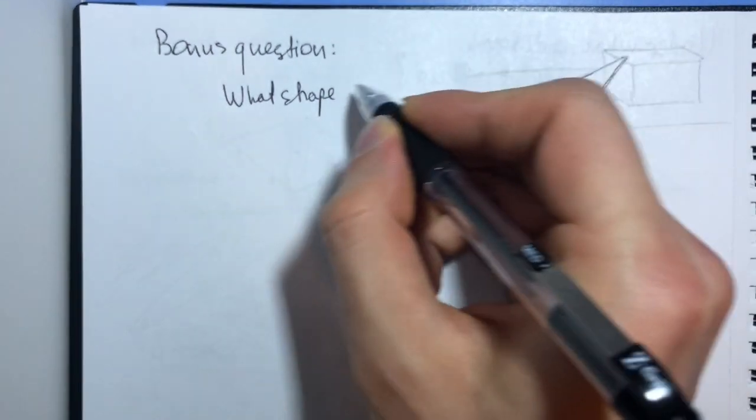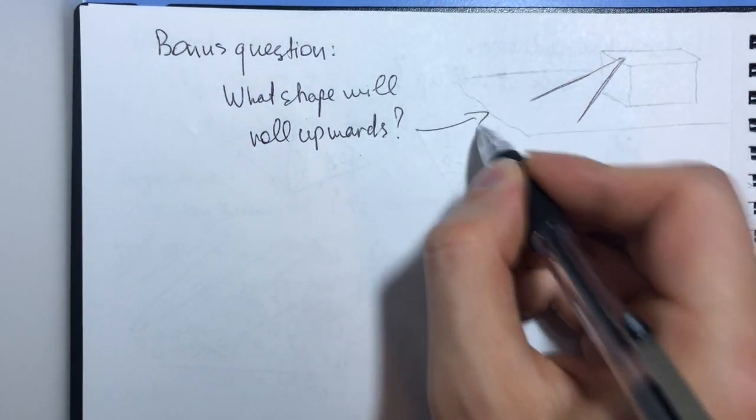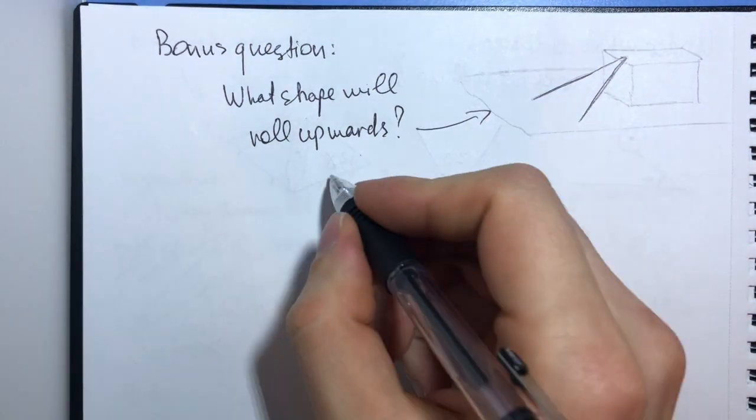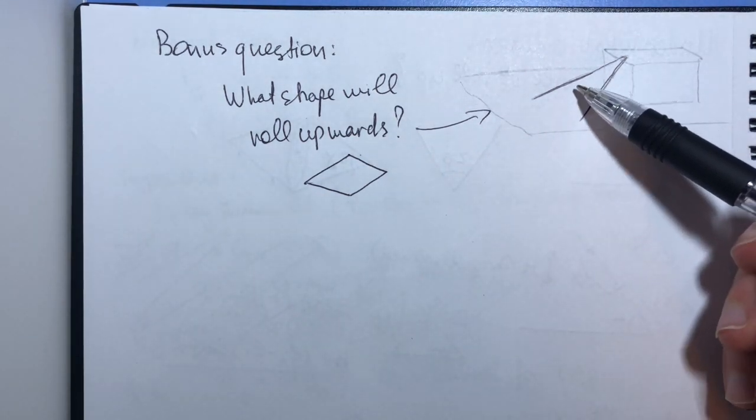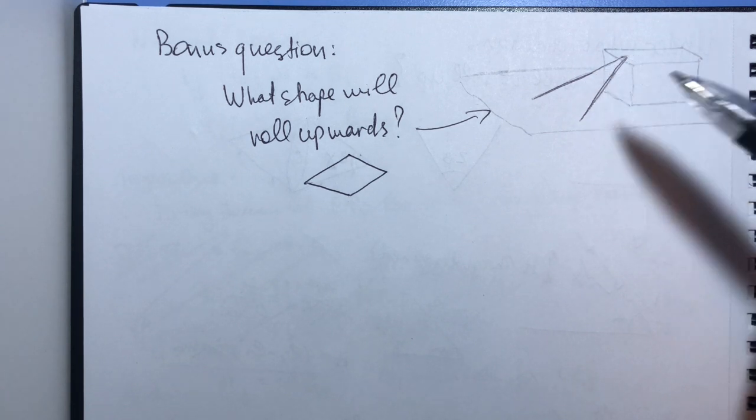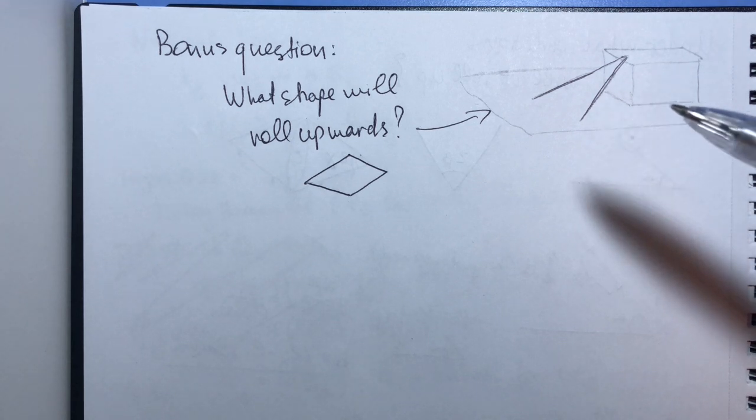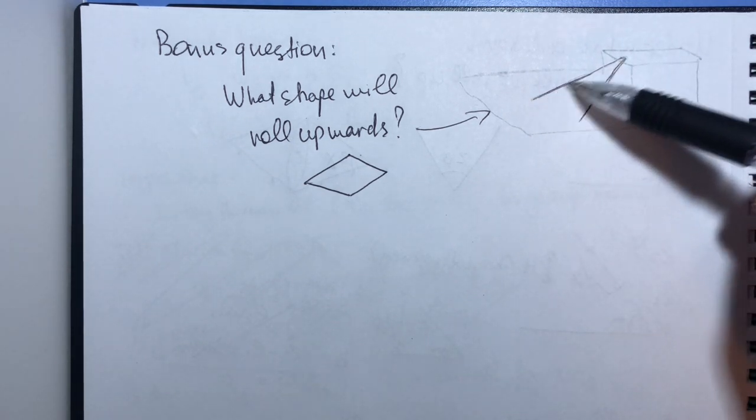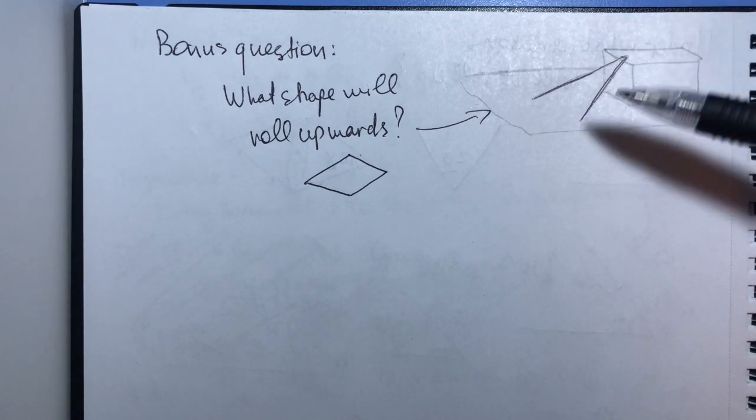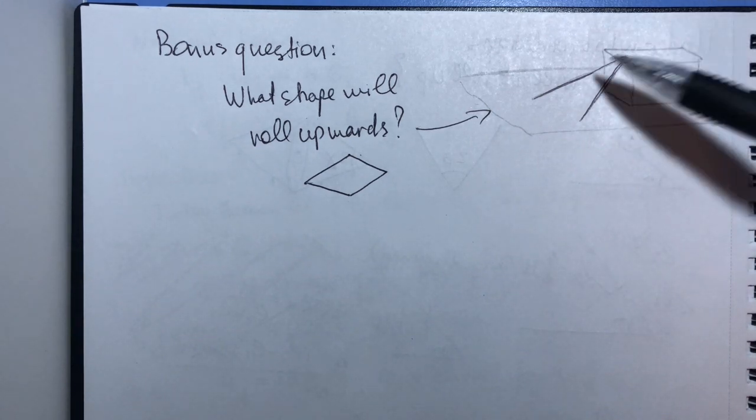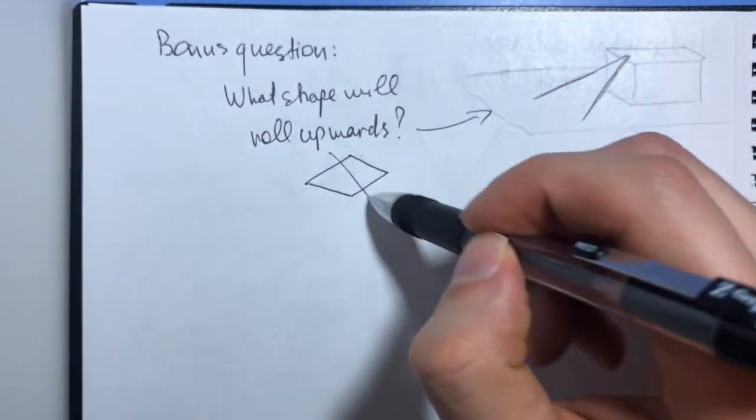So what shape will roll upwards on this setup? So the cone will of course not work because as it goes up it gains height both with respect to us treating these rails as a plane and also with respect to the rails, right? So there is no way for it to lose height with respect to one setting and gain height with respect to another. As it goes up, it only gains energy and as it moves down, it only loses energy. So this shape does not work.